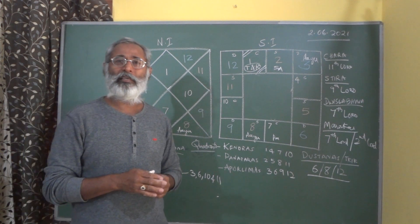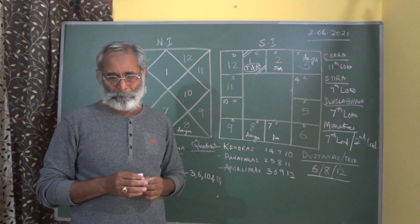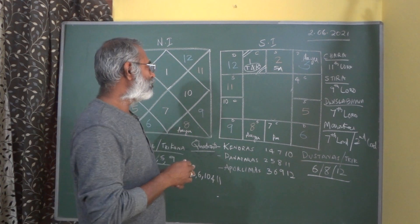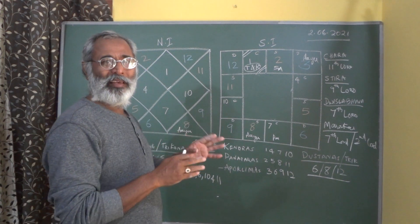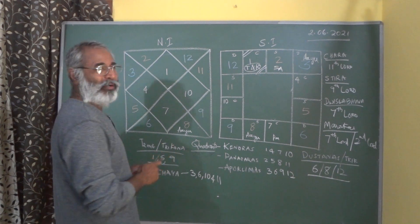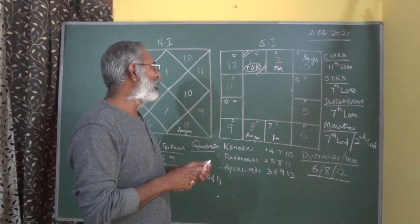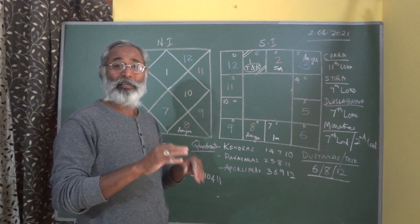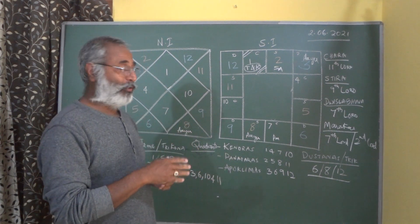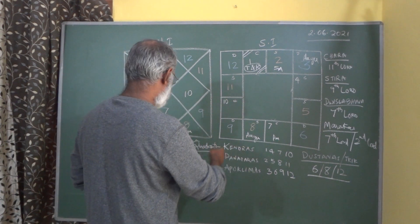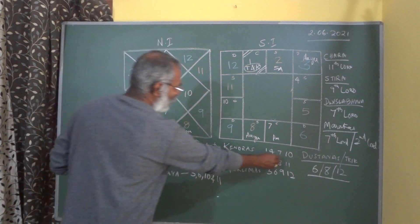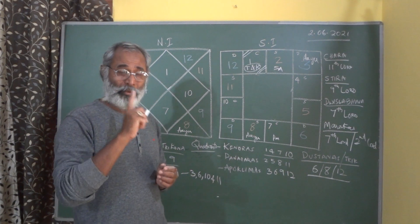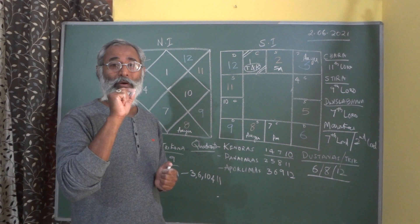Thank you for today's class. One more point — it is Kendradhipati Dosha. All Kendradhipatis — I have been using this word when explaining the four corners — but I did not tell you that Kendradhipati Dosha exists for every ascendant. The 1, 4, 7, 10 lords will always get Kendradhipati Dosha if they do not own a Trikona also.